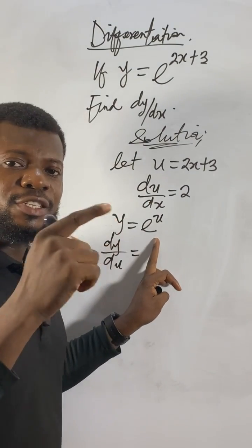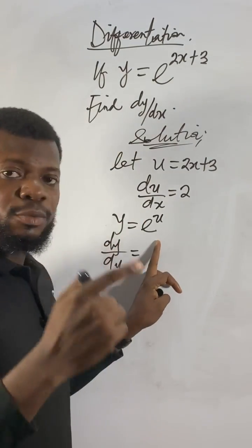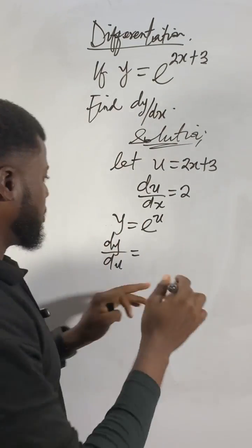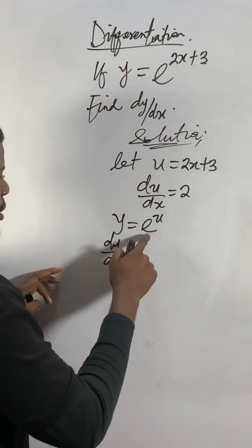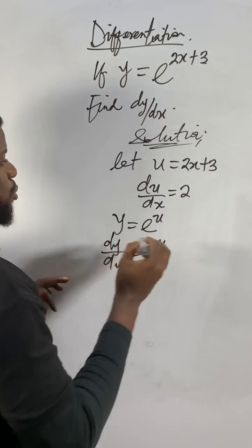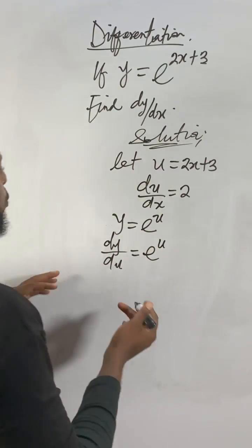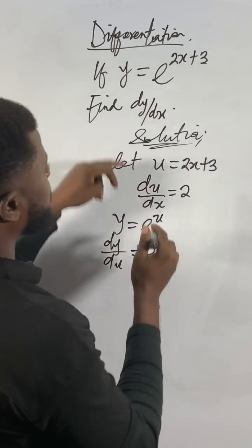The differentiation of e^x — or e^u in this case. If we differentiate e^u, we still get e^u. That rule stays the same. Now we have what we need to apply the next step.